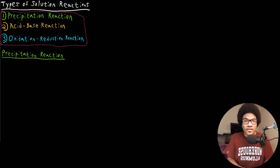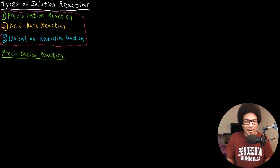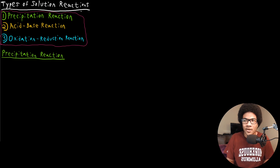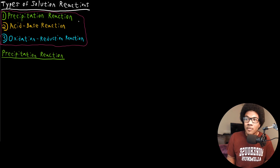In this video, we're going to go through the different types of solution reactions. At this point in the class, we've seen a lot of chemical reactions, but we've barely scratched the surface on the amount of chemical reactions that exist in all of chemistry. With this daunting number of possible chemical reactions, it's useful to group them into similar processes. These three reactions represent broad categories that virtually all chemical reactions will fit into.